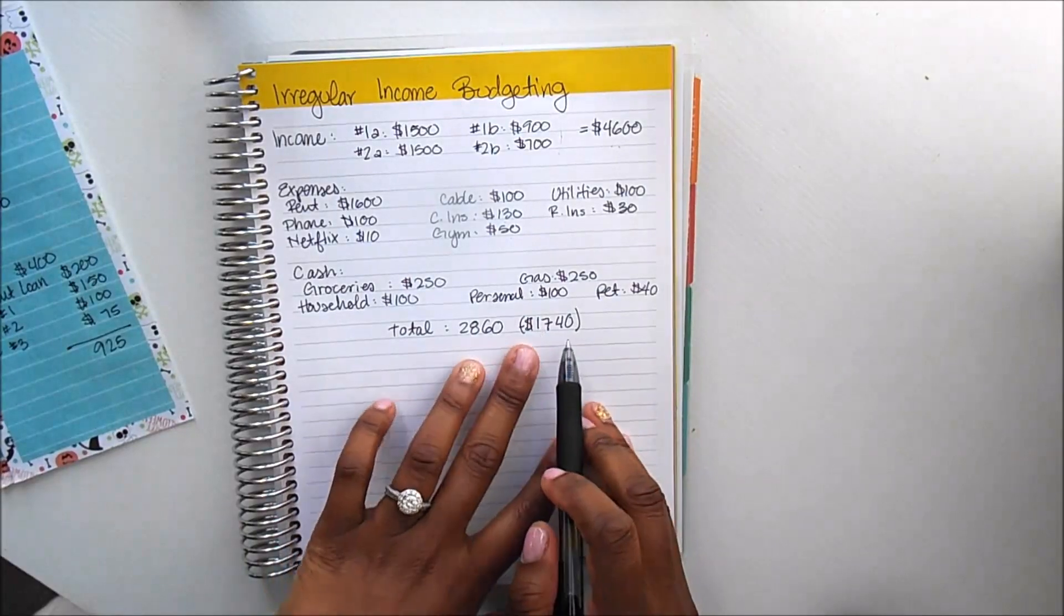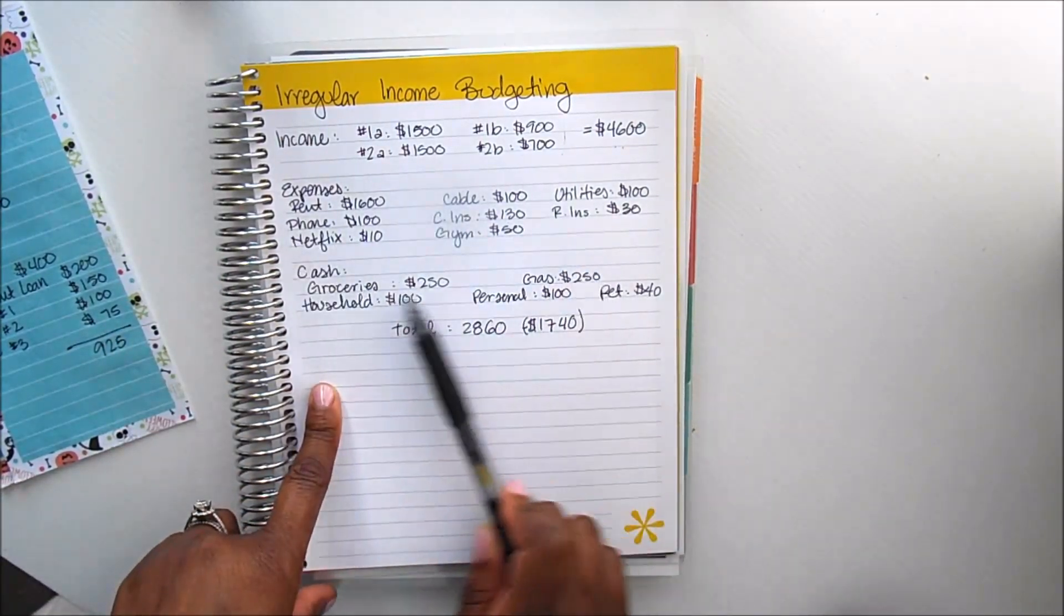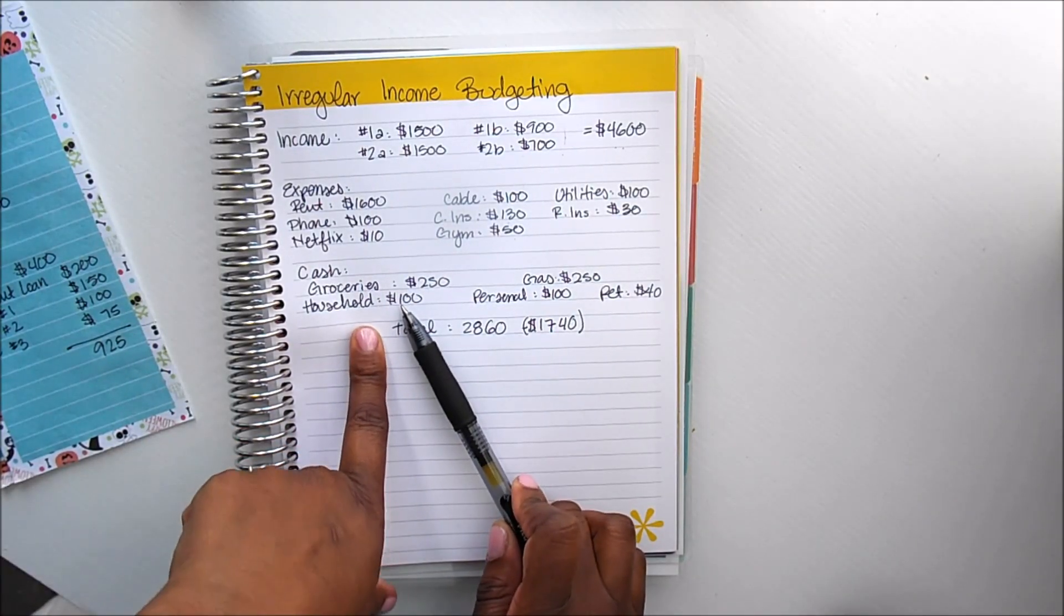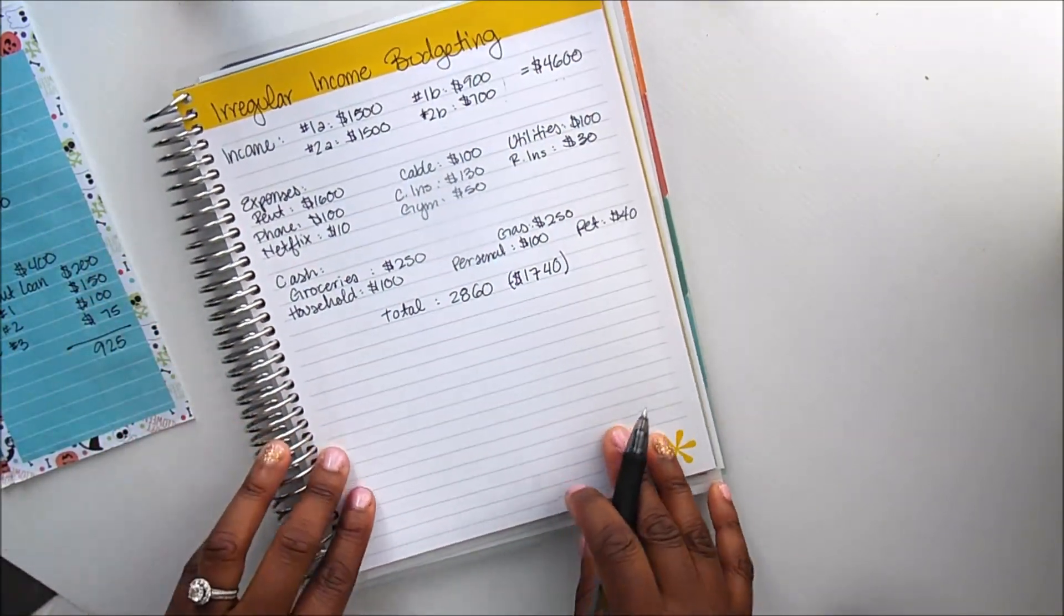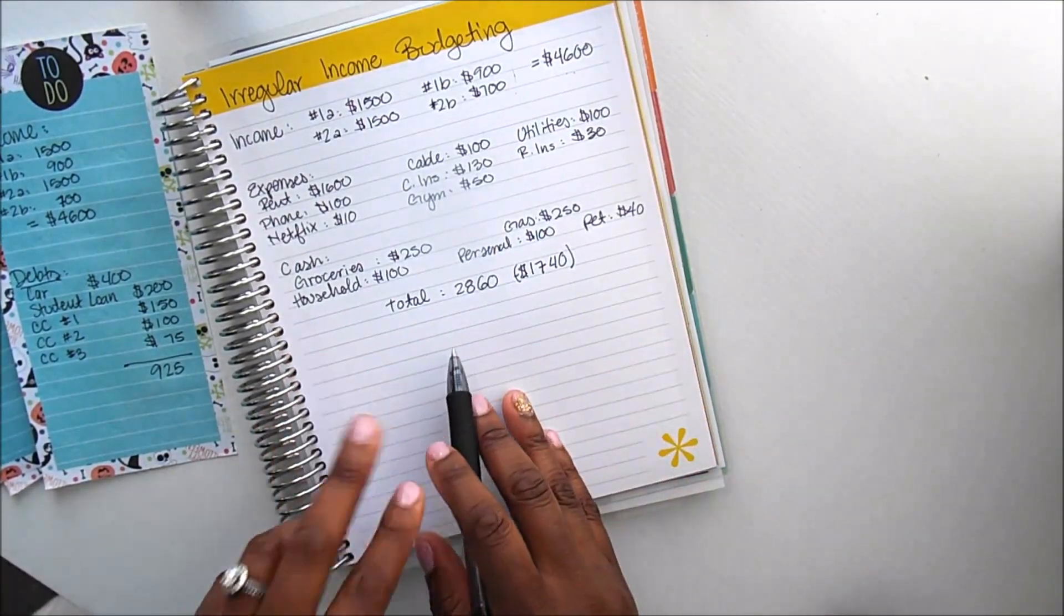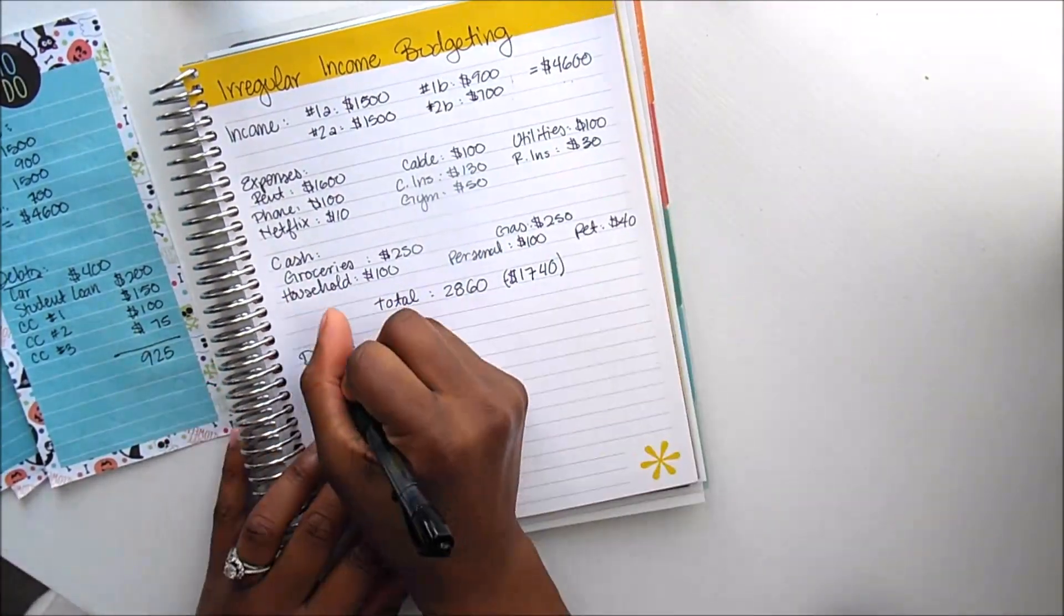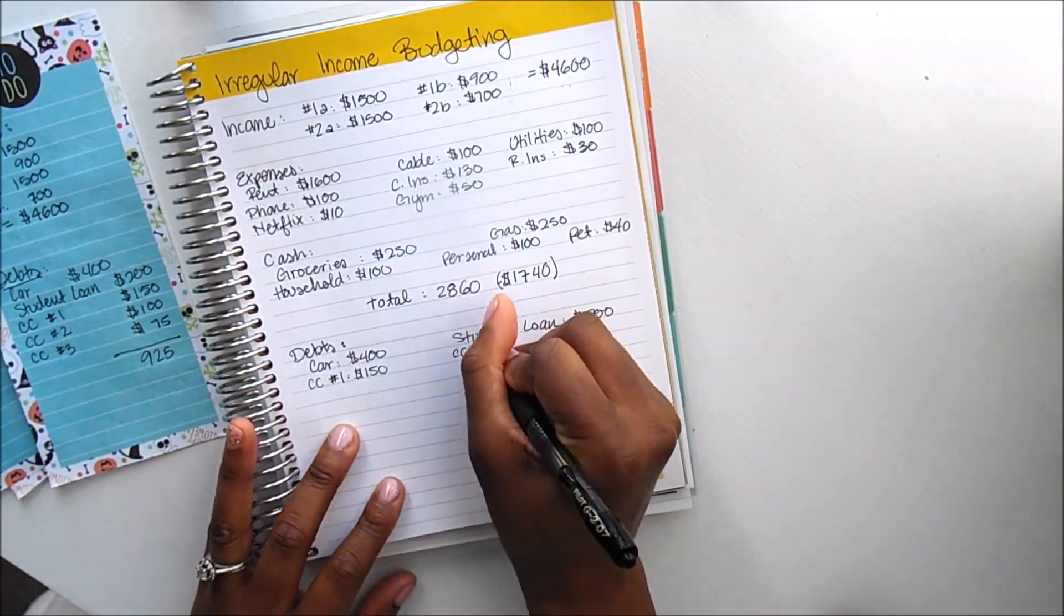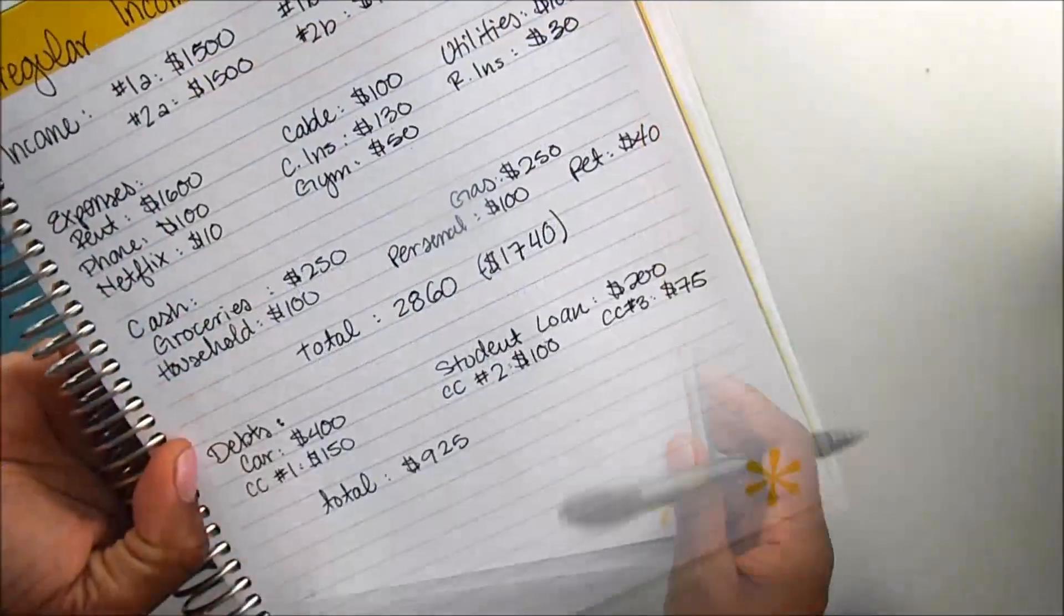Now because we have $1,740 left over, I did not include our debt expenses or payments within the expenses category, which technically you would do that, but I separated it out just for ease of the video and just to see some different examples here. So the next thing I'm going to do is write out the debts that we have here.